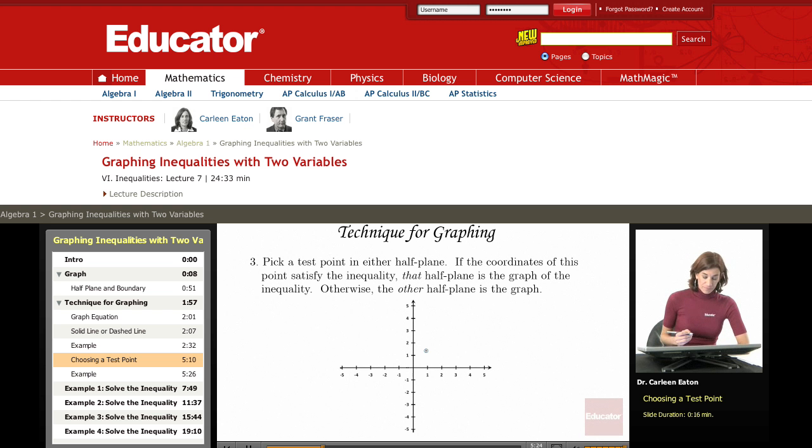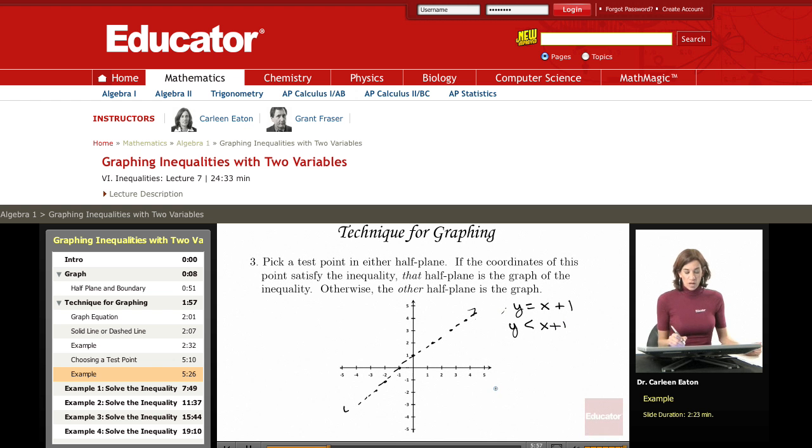For example, I could again use the one we just discussed, y equals x plus 1. And we've already graphed out that line, so let's just continue it right here with this dashed line. That was the equation for the line, and the inequality was that y is less than x plus 1. So that gives me the line. Here's my inequality.